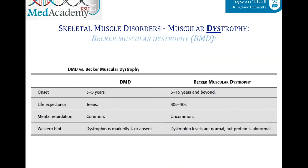Duchenne and Becker muscular dystrophy are caused by different mutations in the same gene. Becker muscular dystrophy has a clinical picture similar to Duchenne but is generally milder and usually occurs later in life.